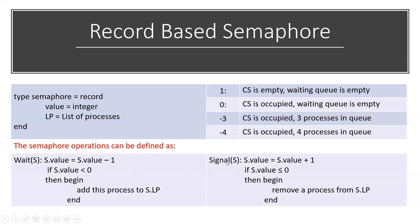When a process leaves the critical section, the signal operation performs S dot value equals S dot value plus 1. Taking minus 3 as an example: minus 3 plus 1 equals minus 2, which is still less than or equal to 0. So we remove a process from the waiting list — that process has completed execution and is taken off the list of processes.